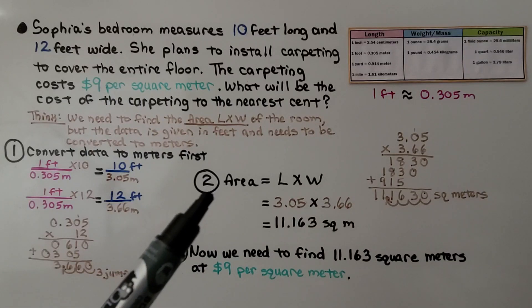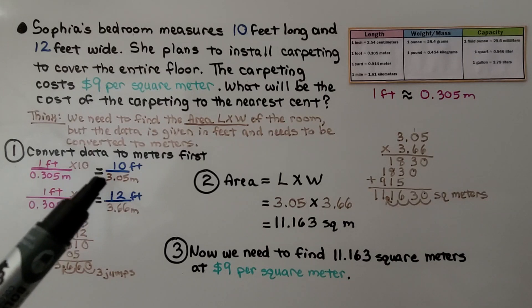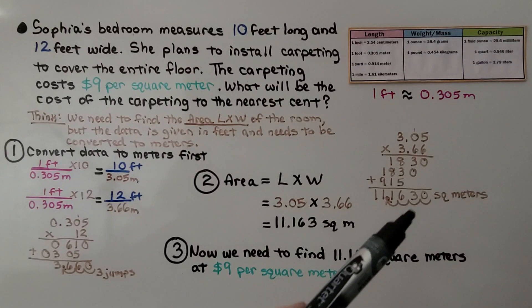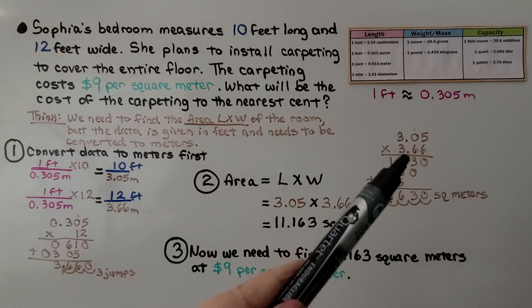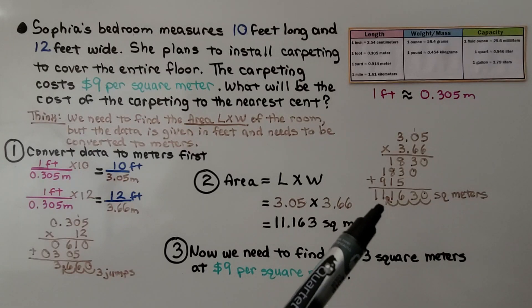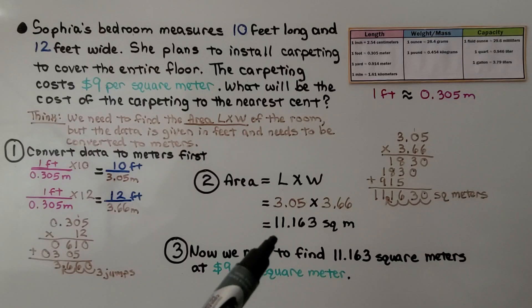Now we need to find the area, and the area is equal to length times width. So we're going to do the 3.05 times the 3.66. We can do it on the side, and we have 1, 2, 3, 4 decimal jumps in the equation. So there's going to be 4 decimal jumps in the product, and we get 11.1630. We know that zero on the right is not necessary. So we get 11.163 square meters.